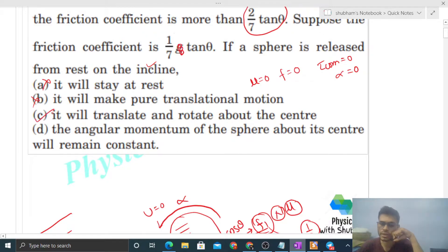It will translate and rotate about the center - yes, but pure rotation means pure rolling will not happen. Translation will also happen and the body will also rotate about center of mass. Option D: the angular momentum of the sphere about its center will remain constant - no, it will not remain constant because the sphere has a torque about center of mass. So alpha is not equal to zero, because of alpha, omega will change, omega will increase, and the body's angular momentum about the center of mass will also increase.